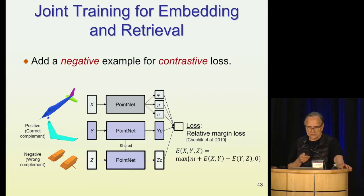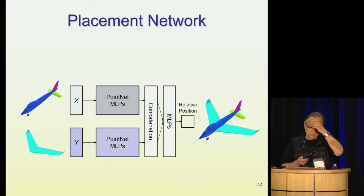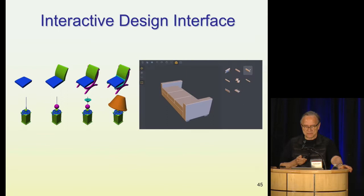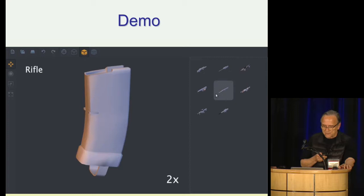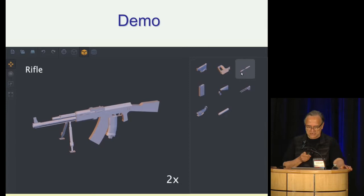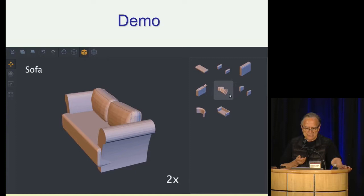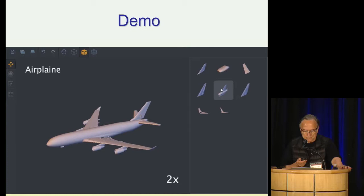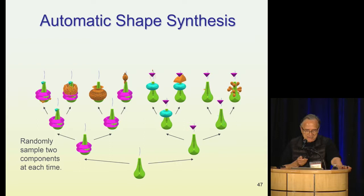This creates an architecture complemented by a placement network, so you know not only what the complementary part is but where it goes in the shape. We can use this for interactive design. Essentially there are part suggestions that the user selects and adds to very quickly complete shapes. The whole process can be automated so that from a given part, you can start adding things in multiple ways to create multiple shapes — a spectrum of possibilities starting from a given base.